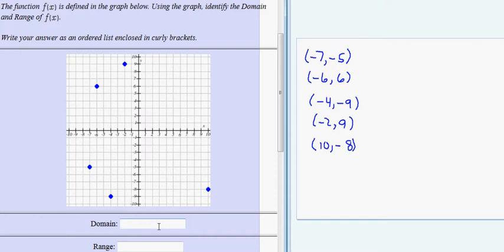So in my domain, I'm going to put left brace, and then I'm going to start listing my x values. Since they're just x values, not the points, that would be negative 7, and then we separate them by a comma, negative 6, negative 4, negative 2, and finally 10. Those are all my possible inputs. So I'm going to use a right curly bracket.